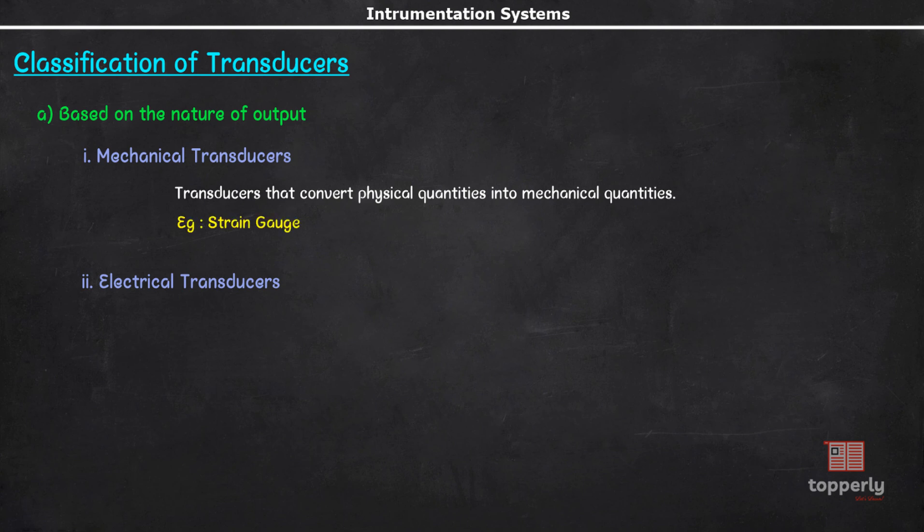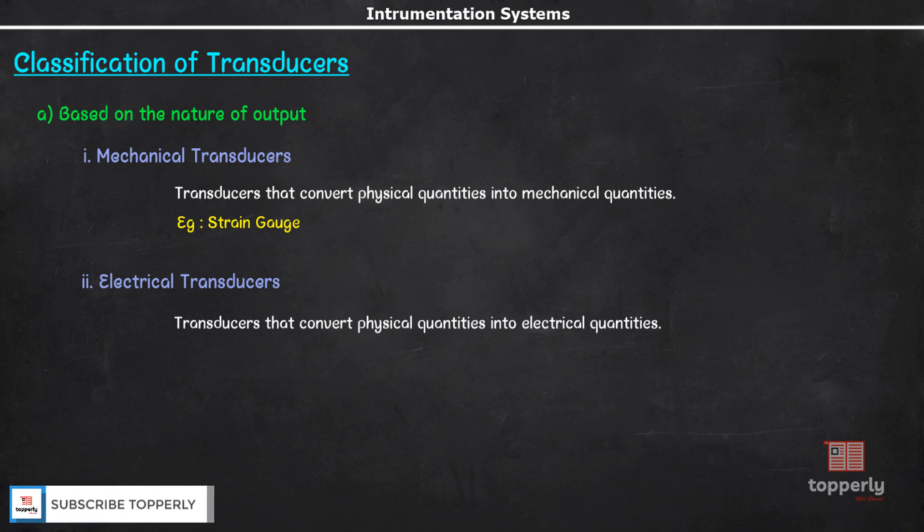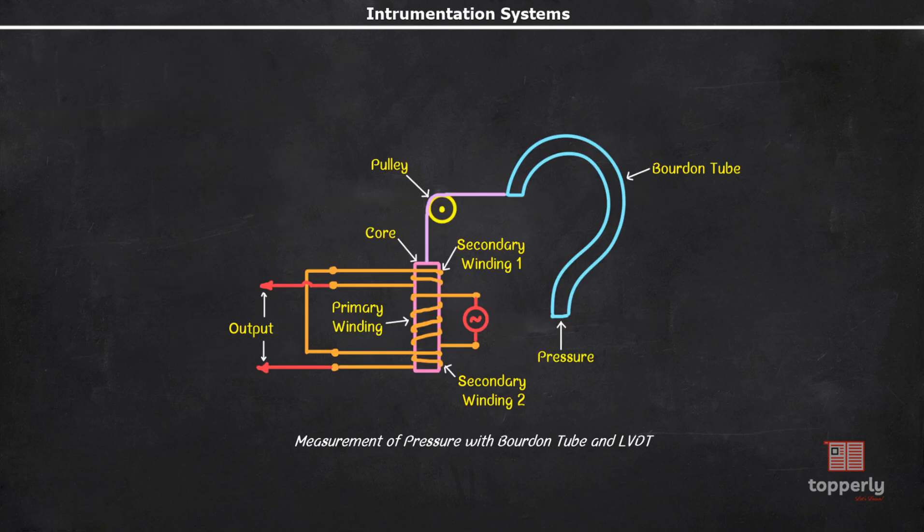Similarly, transducers that convert physical quantities to electrical quantities are called electrical transducers. An example is a thermocouple that changes temperature differences into small voltages. Now, most often we use these two types of transducers in cascade to obtain the desired signal. For example, to measure pressure, we can use a Bourdon tube.